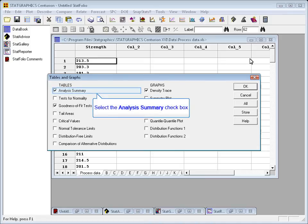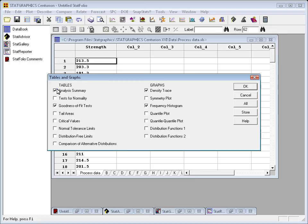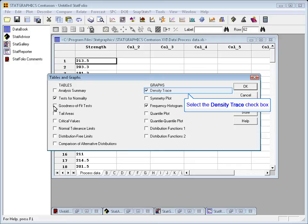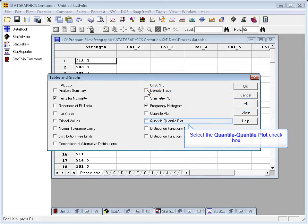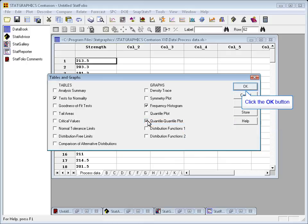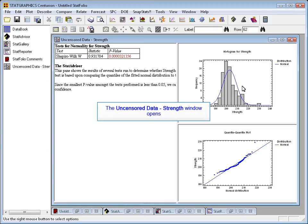When the list of tables and graphs comes up, there are a number of things you can check. I'm going to ask for the test for normality on the left-hand side, and on the right-hand side, I'm going to ask for a frequency histogram and also a quantile-quantile plot. I'll then press OK, and it will open up an analysis window with a single table and two graphs.